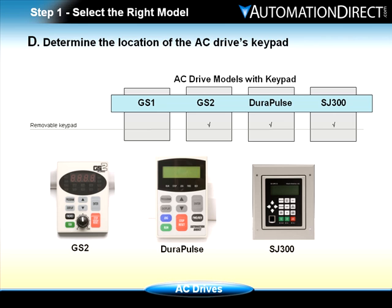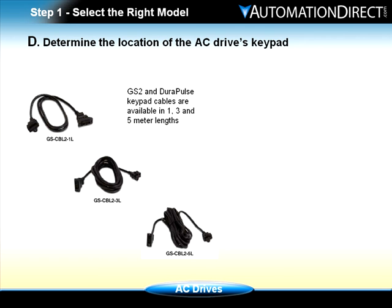The keypads of the GS2, DuraPulse, and SJ300 are removable and can be remotely mounted for easy operator access, and carry a NEMA 1 rating. The DuraPulse keypad can store up to three separate drive configurations. We will mount the keypad on the drive's enclosure door. Remote mounting requires the purchase of a keypad cable for the GS2 and DuraPulse drives, available in one, three, and five meter lengths.